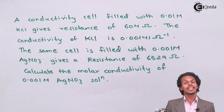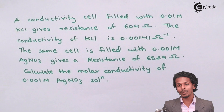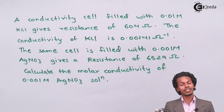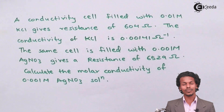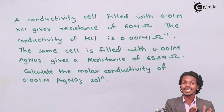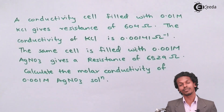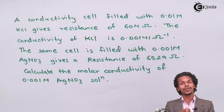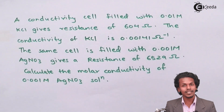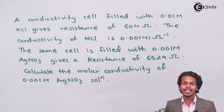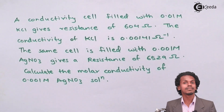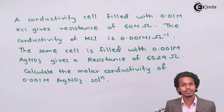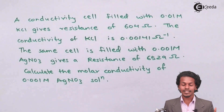In this case, there are basically two solutions mentioned: one is the KCl solution and one is the AgNO3 solution. So first of all, we have to separate the data for each solution — separately for KCl and separately for AgNO3 — and then see how we can get the required result.